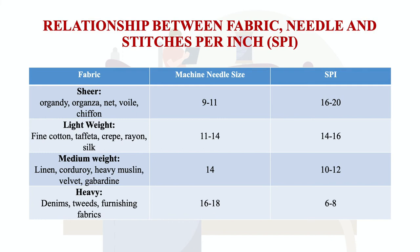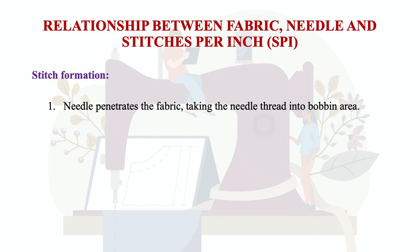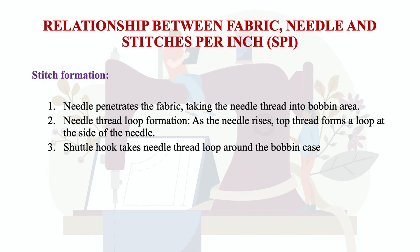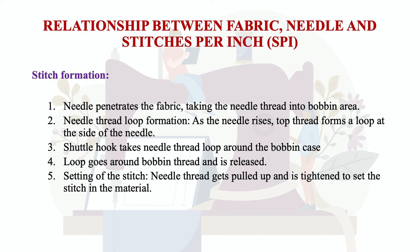We adjust stitch tension and regulation on the machine accordingly. Stitch formation on the fabric occurs in 5 steps: first, the needle penetrates the fabric taking the needle thread to the bobbin area; then the needle thread loop forms; then the shuttle hook takes the needle thread loop around the bobbin case; the loop goes around the bobbin thread and is released; and finally the needle thread is pulled up and tightened to set the stitch in the material.